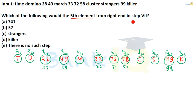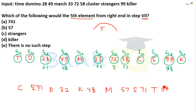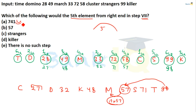Next question: Which element would be 5th from the right in step number 7? Writing out step 6: C 27 D 32 K 48 M 57 S 71 T 98. In step 7, numbers are changed by multiplication. The 5th from right is 57, associated with M, which is the 13th letter. So 13×57=741. The right answer is A1.